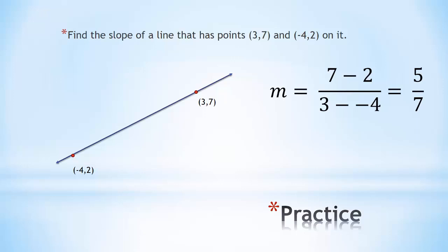So 7 minus 2 is 5, 3 plus 4 is 7. The slope of this line is 5/7. I chose to start with the first point as my x2, y2. It doesn't matter which point, and I'm going to prove that.